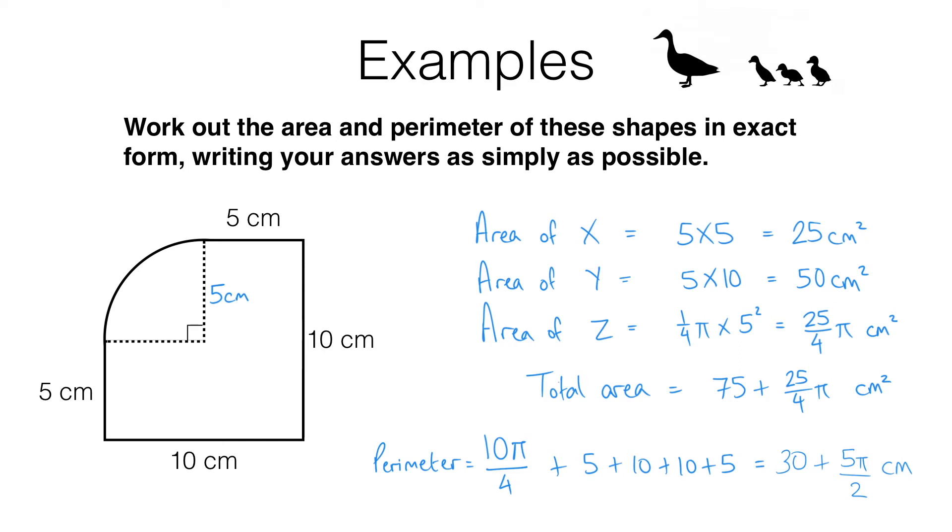Now you might be wondering why pi has ended up inside the fraction when we were working out the perimeter and why it was outside the fraction when we were working out the area. You need to be really clear that it doesn't make a difference whether the pi is outside the fraction or in the numerator like this. Let's take 5 pi over 2 for example. If we consider 5 over 2 lots of pi, then from the lesson on multiplying fractions you should know that that is the same as 5 over 2 lots of pi over 1.